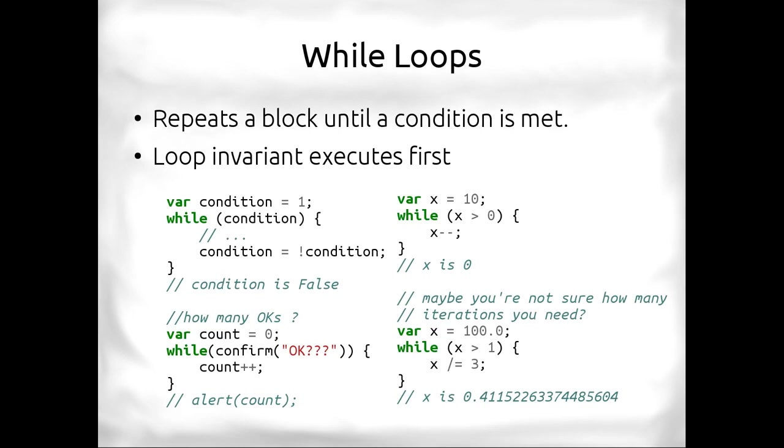The first loop in JavaScript that we're going to cover will be the while loop. The while loop is generally used when you want to repeat a block until a condition is met. Usually, this is because you don't know how long it's going to take or how many iterations you're going to need. The loop invariant executes first. You can do a do while, which reverses this, where the loop invariant executes last.